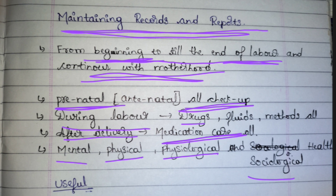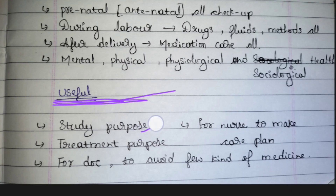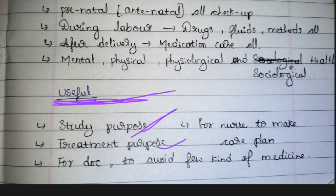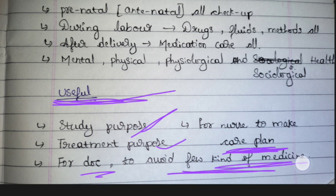The uses of maintaining these records are mainly for study purposes — nursing students can go and refer to patient records for study. For treatment purposes, by seeing those records the doctor will come to know what medications the patient is allergic to, or which medications she has frequently used, so appropriate medications can be provided for faster healing. For nursing, it is very useful for making care plans, and for doctors to avoid certain kinds of medicines.